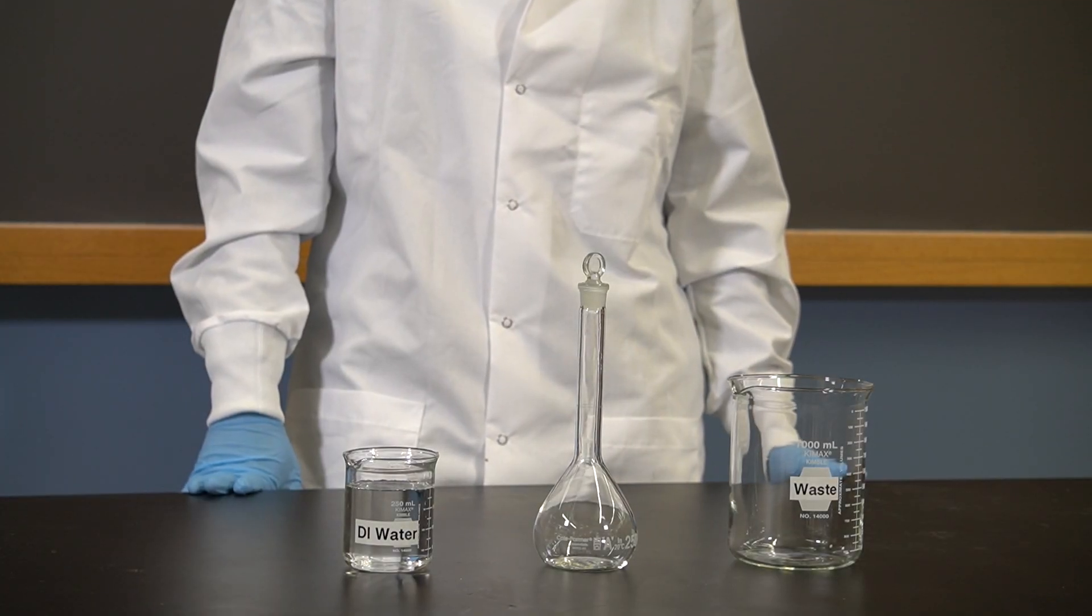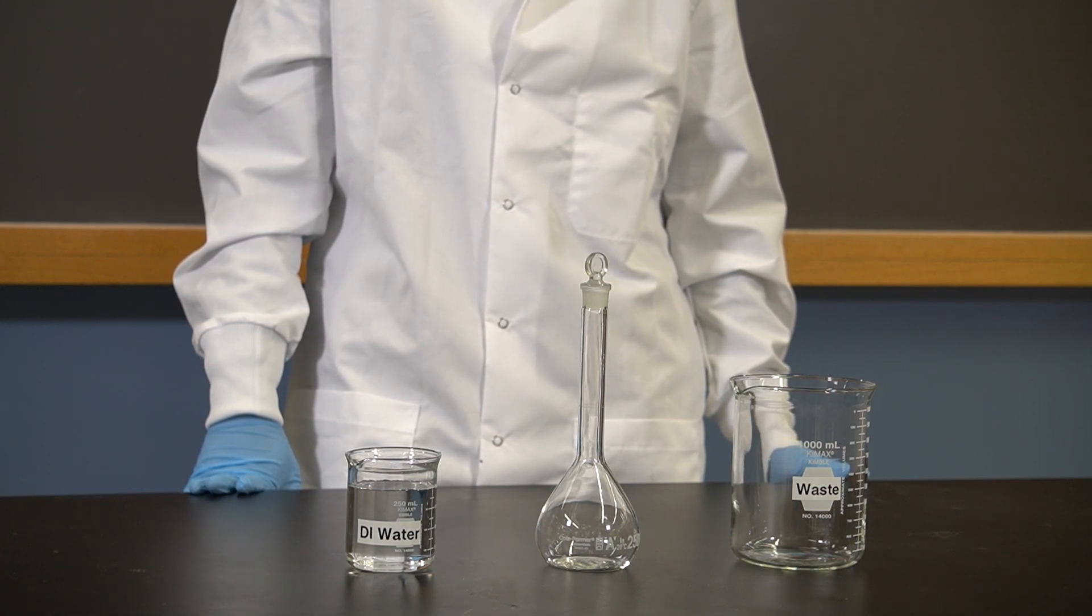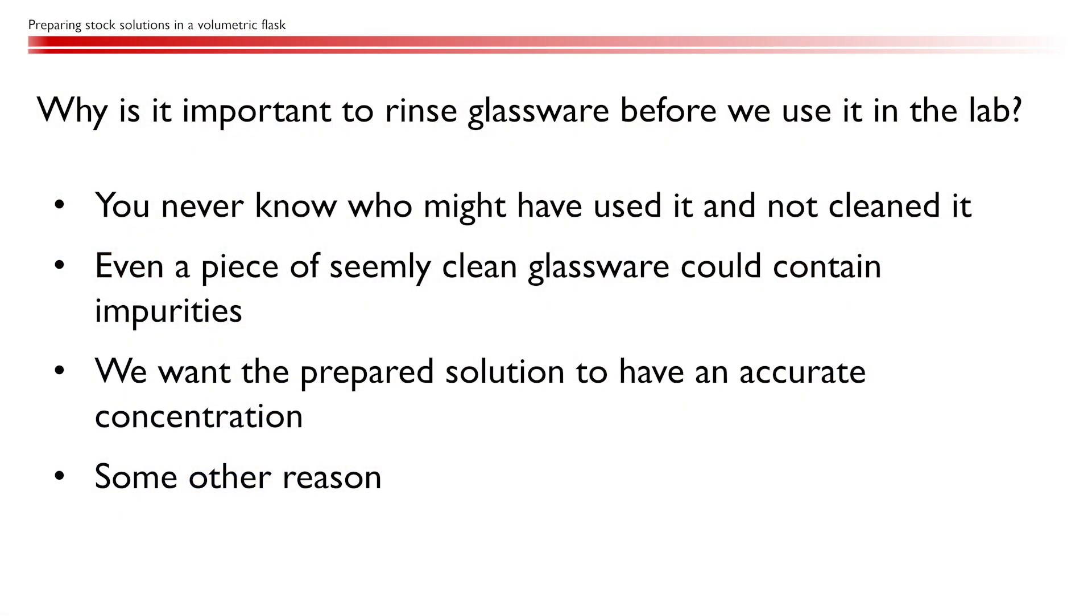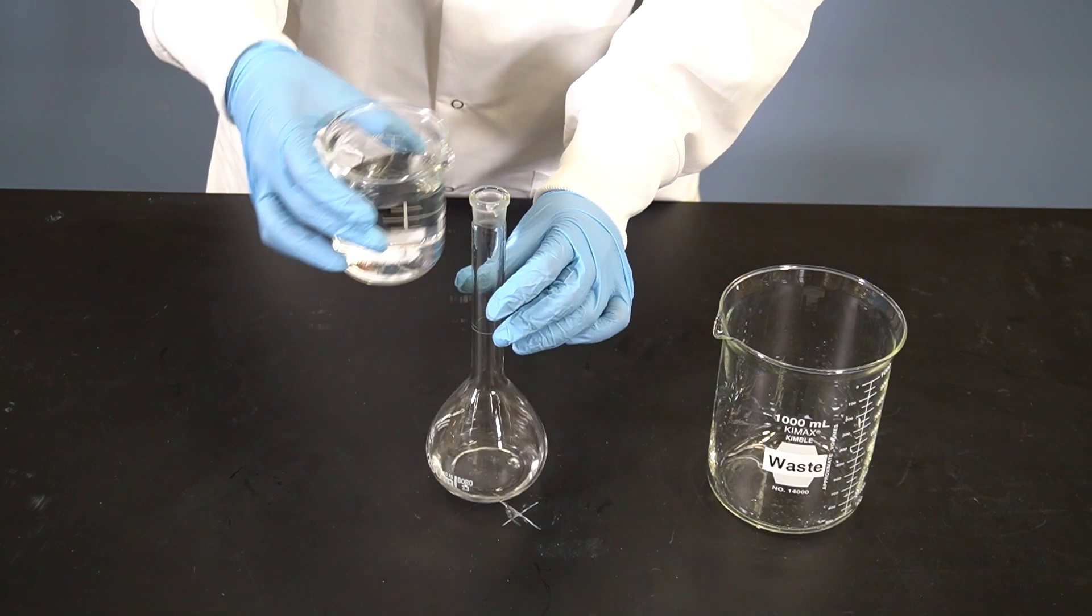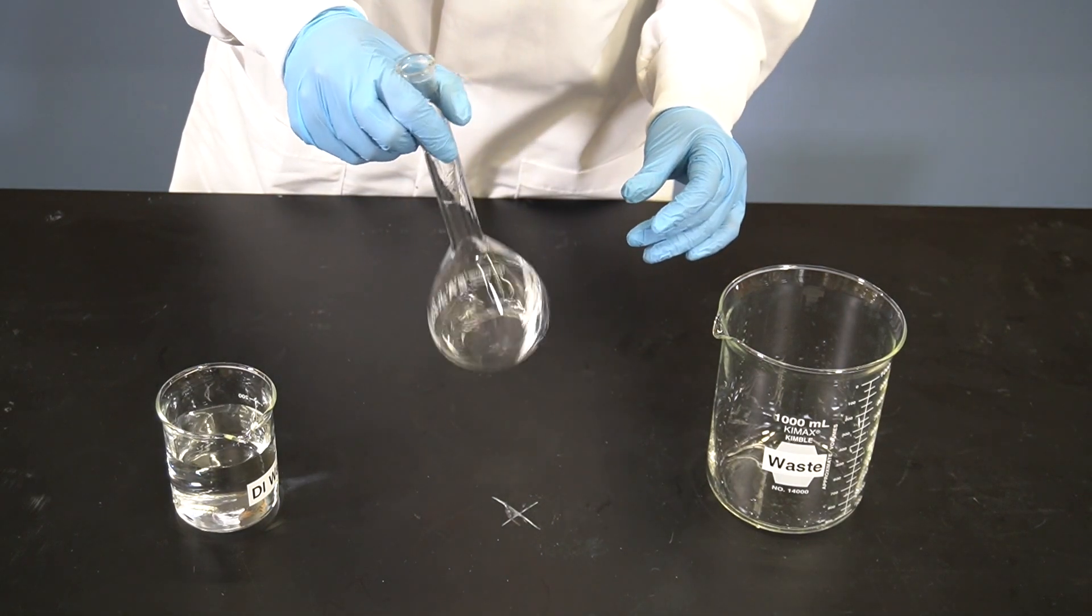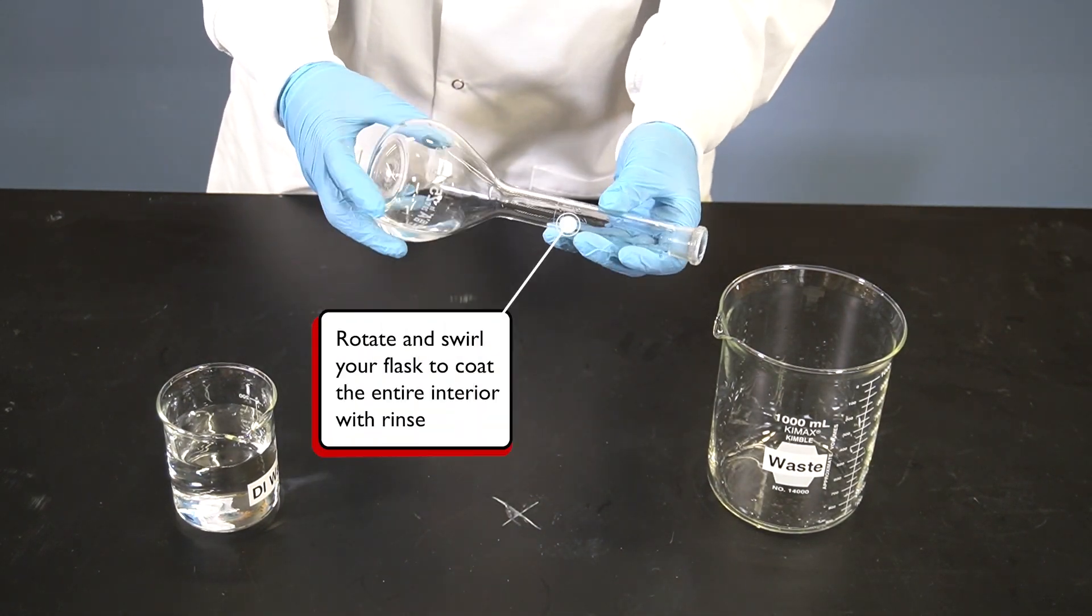Before adding the solute to the flask, we need to rinse the flask with the solvent to ensure it's clean. Why is it important to rinse glassware before we use it in the lab? Remember, the first rinse with a small amount of solvent must be treated as waste and be disposed into the waste beaker, but the second rinse can go down the sink.